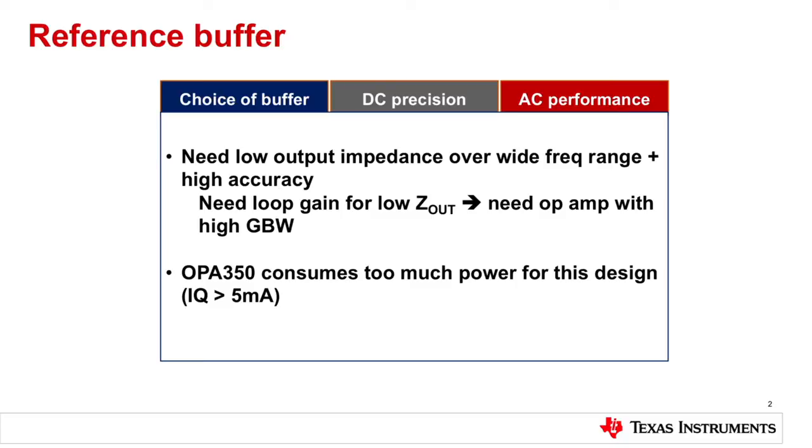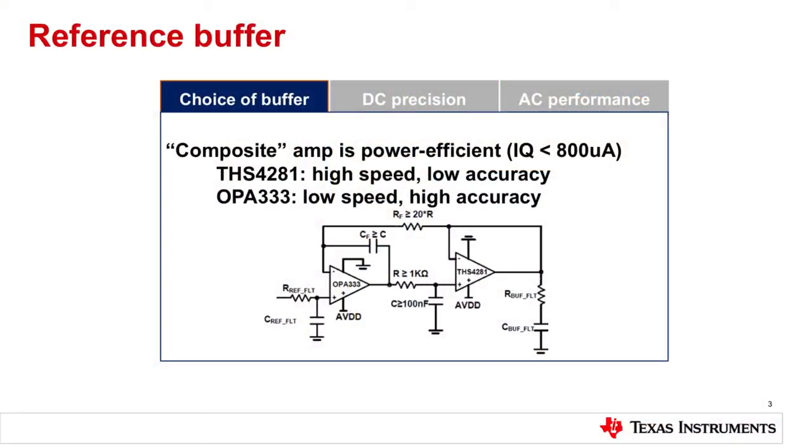The problem with the OPA350 is it lacks DC precision, and it consumes 5 milliamps of current — well in excess of the goal set at the beginning of the design. So 5 milliamps is not going to cut it, and it doesn't have the precision either. If we go to a precision amplifier, we lack AC performance; vice versa, if we pick AC performance, we lack DC precision. That's where something clever comes in: the composite amplifier.